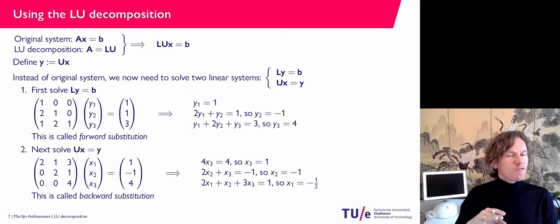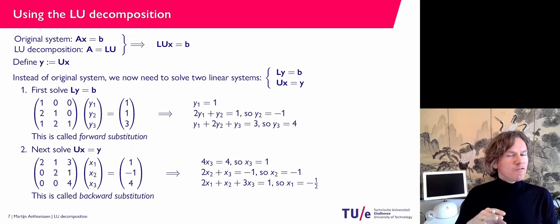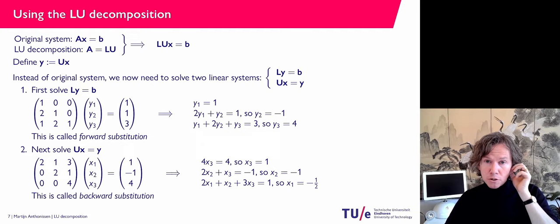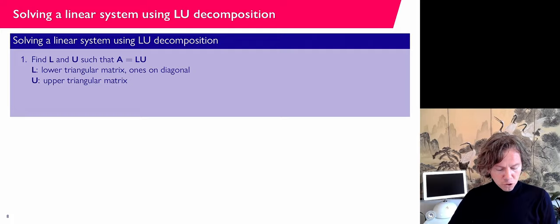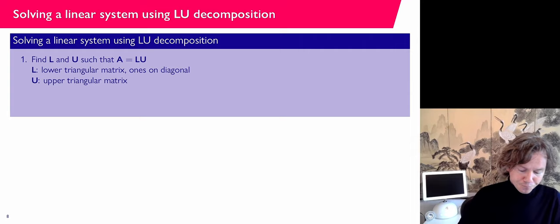We have now found a first, non-final version of how a computer solves linear systems — this is a step towards the complete algorithm. First, use Gaussian elimination to find the decomposition A equals L times U. Then solve Ly equals b using forward substitution, and Ux equals y using backward substitution.